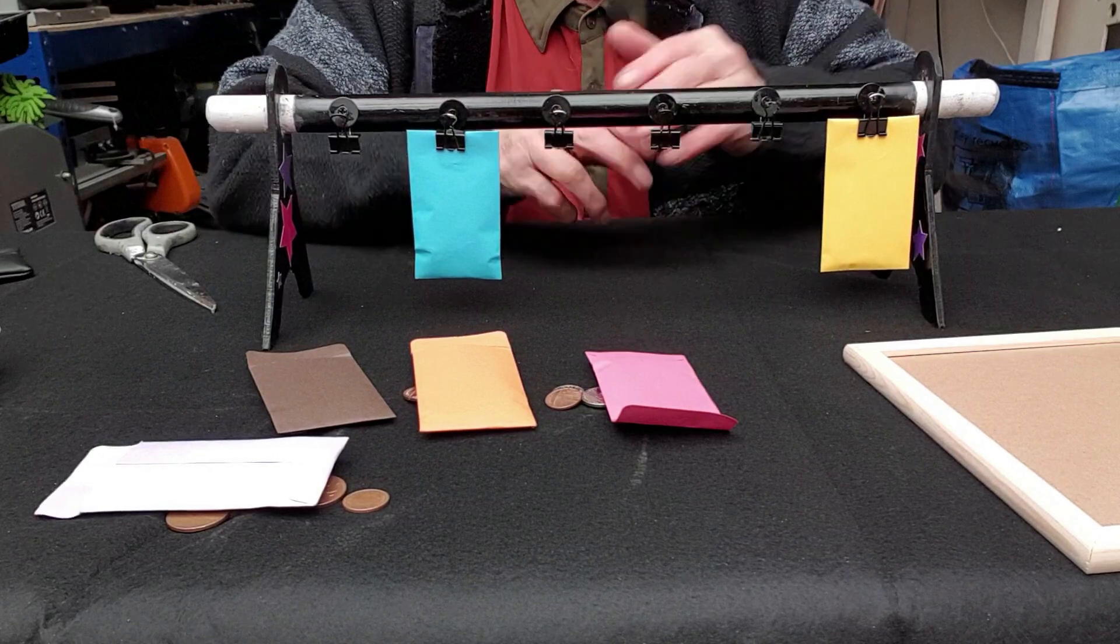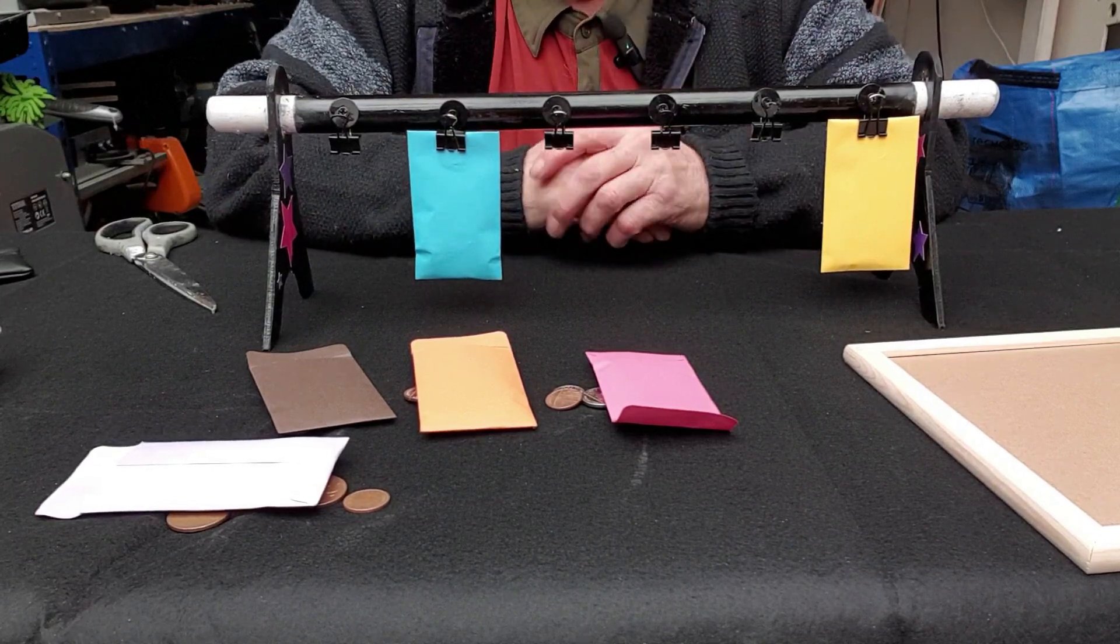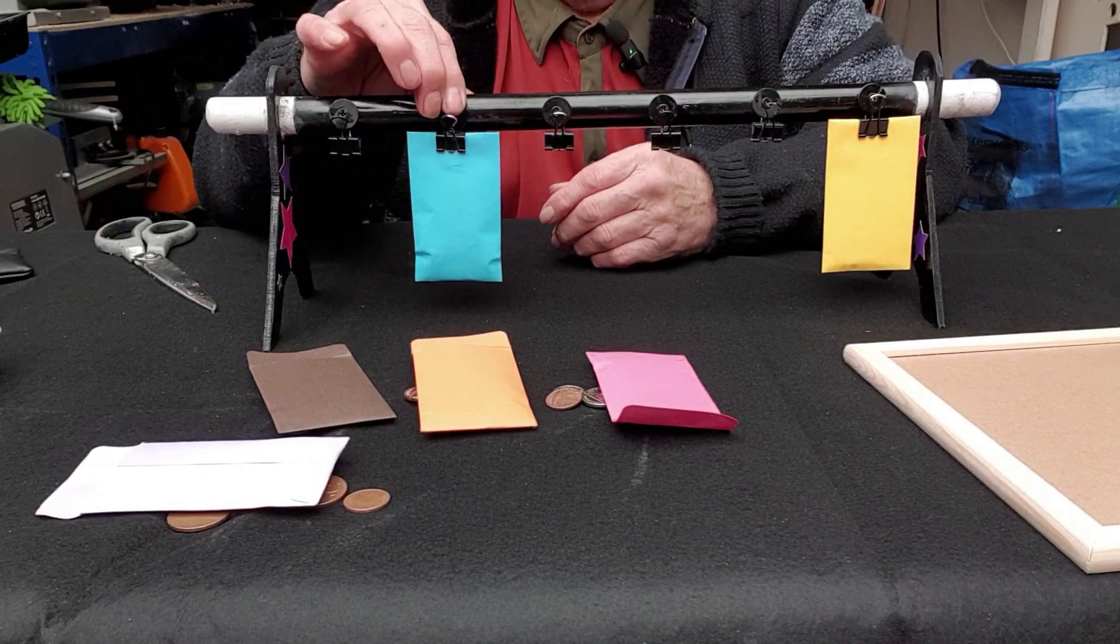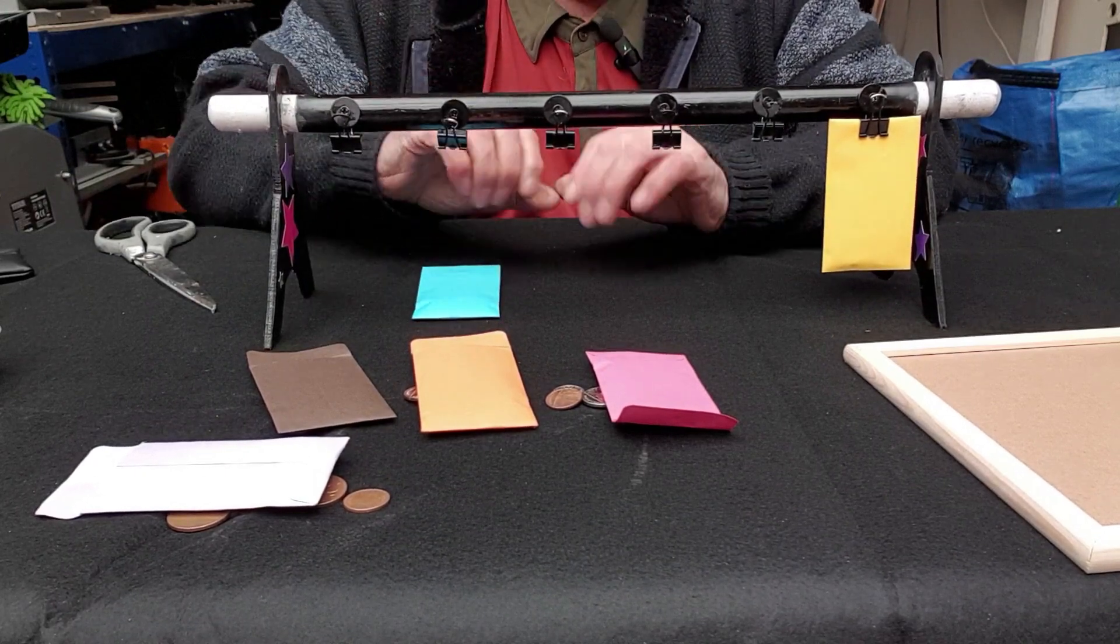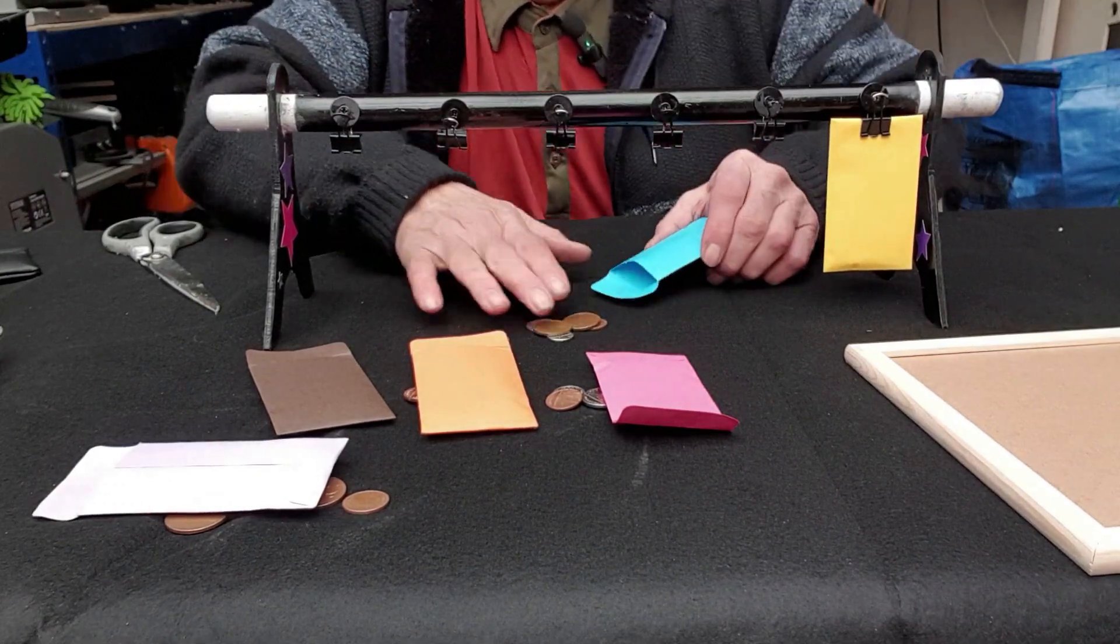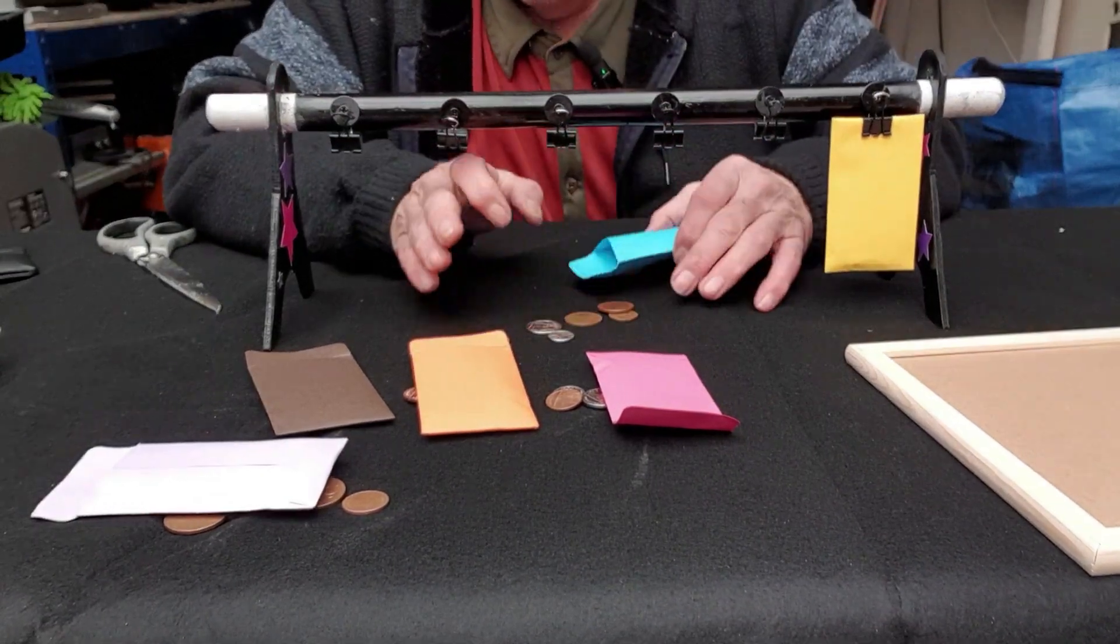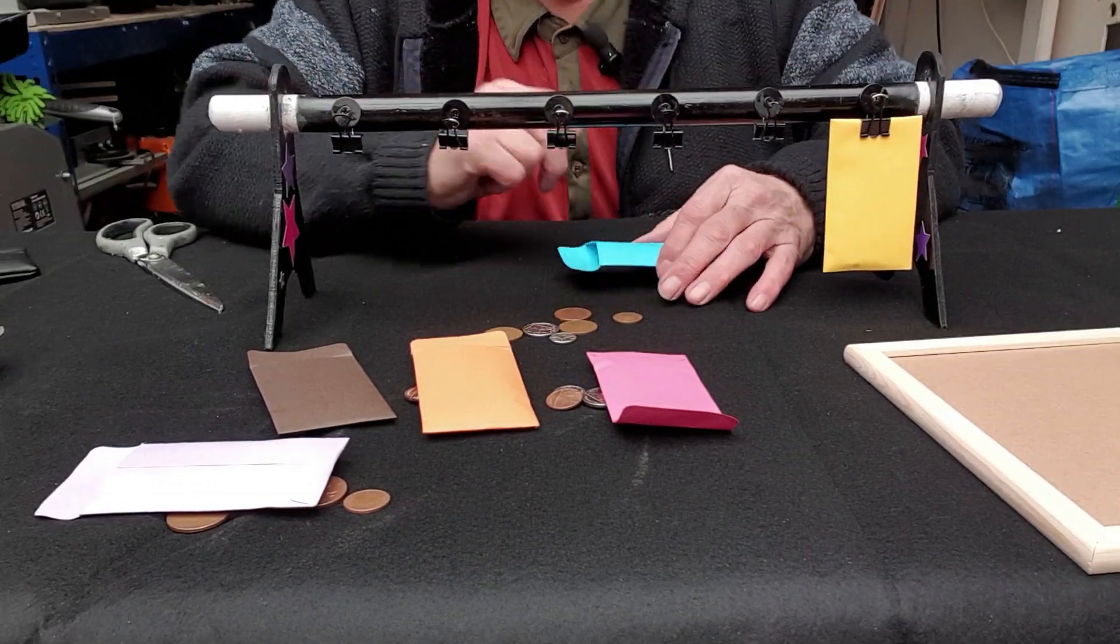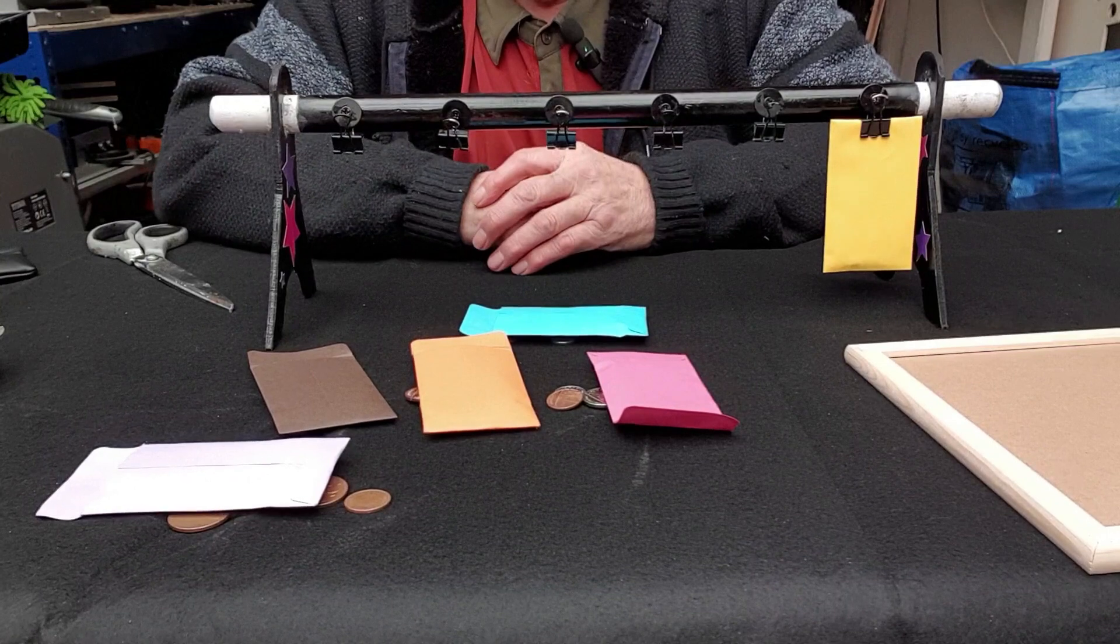That leaves the last two envelopes. I'm going to be left with one of them. The spectator then chooses the blue, yellow, whichever one he wants. He takes the blue. I drop it. He picks it up. I don't touch it. He tips it out. And he's got again a different amount. 15, 17, 19, 21, 22p. They've all got different amounts.